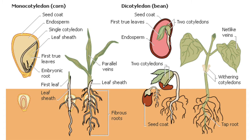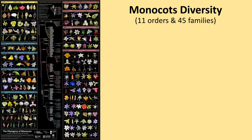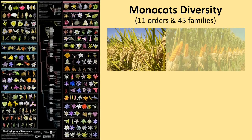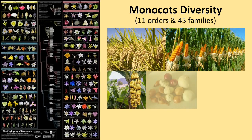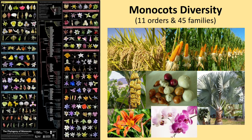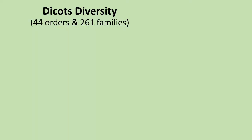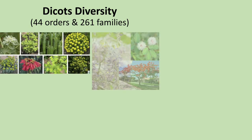On screen you can see the differences between monocotyledon plants, represented by corn (Zea mays), and dicotyledon plants, represented by bean (Phaseolus vulgaris), along with visual examples showing the diversity of monocots and dicots.